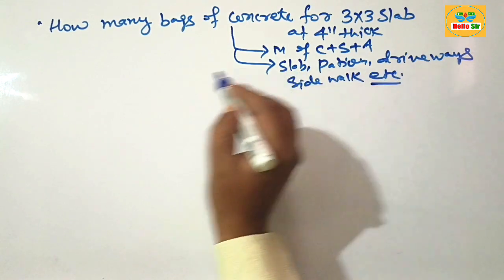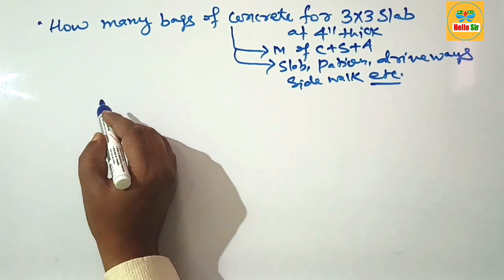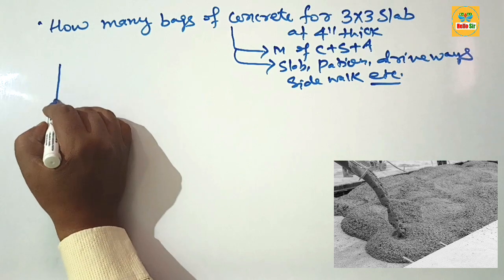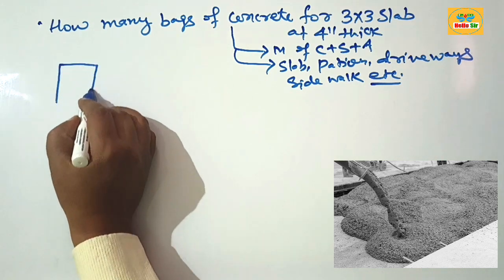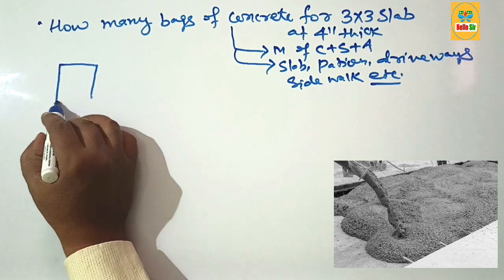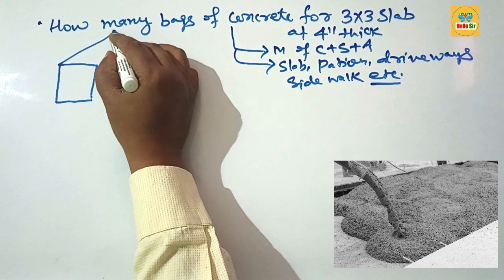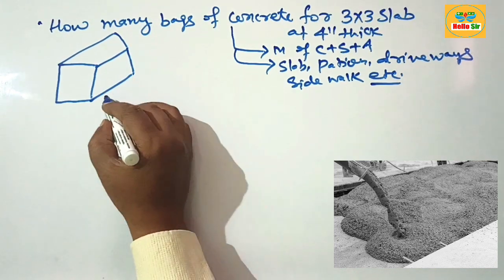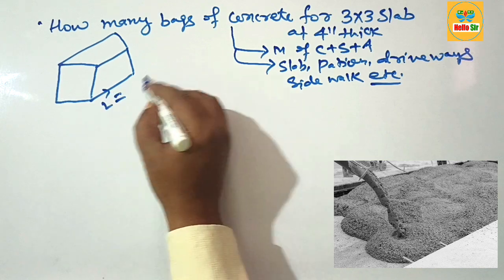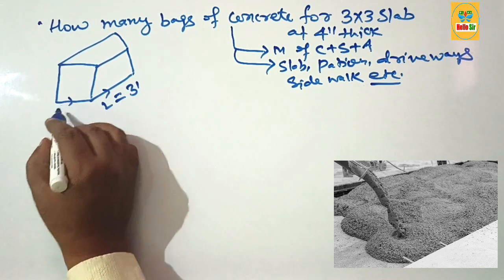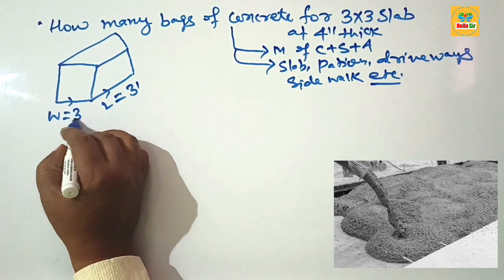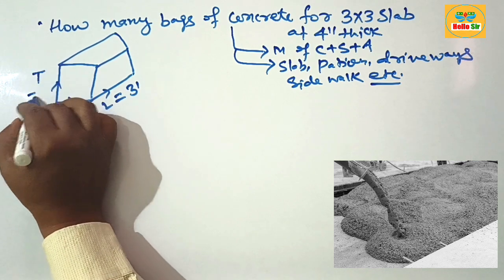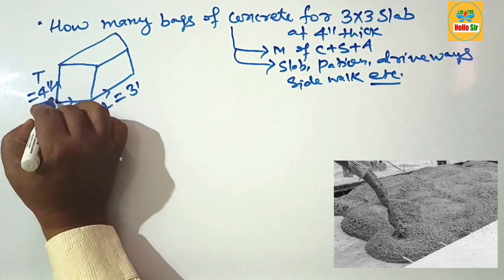Here we make a rough diagram to understand the different dimensions of this slab — the thickness, width, and length. In the diagram, the length is given as 3 foot, the width is given as 3 foot, and the depth of this slab is 4 inches.